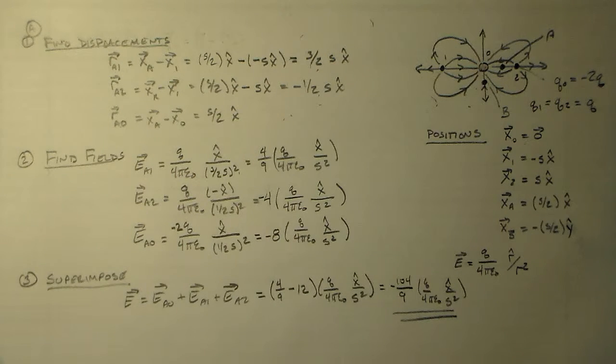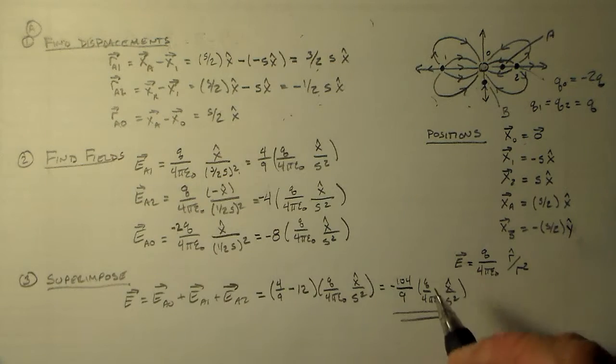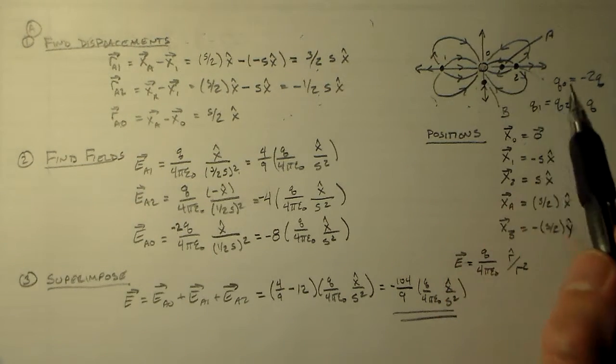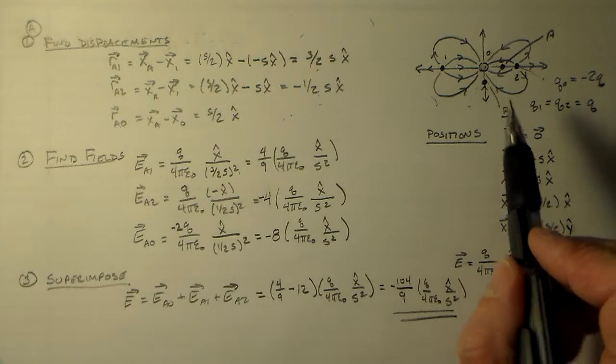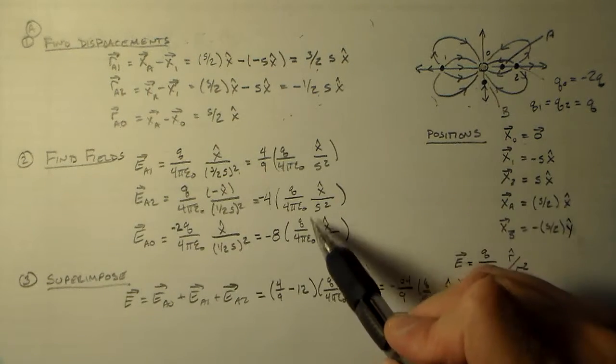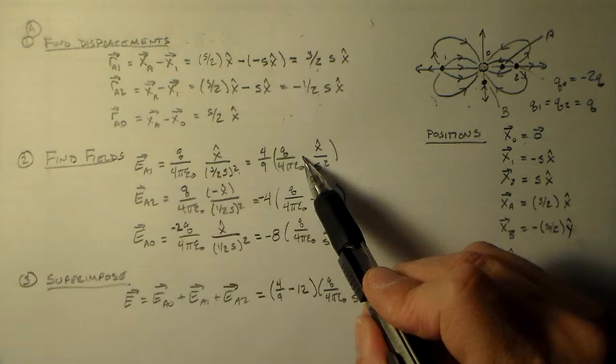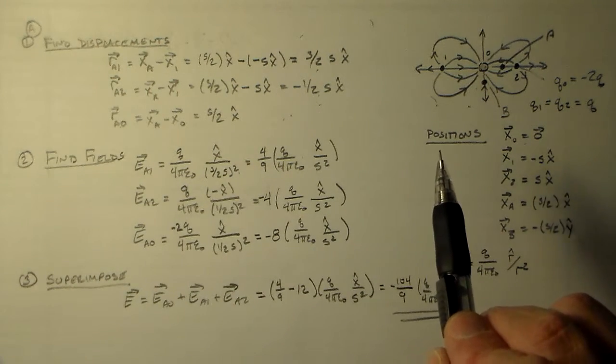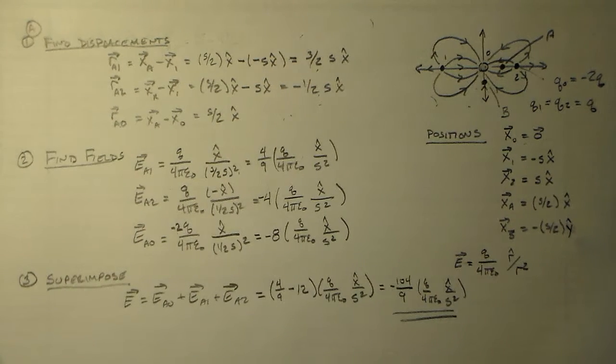So that's equal to minus 104 over 9 q over 4 pi epsilon not x hat over s squared. So that's just a number. And we could look at this in relationship between the field from here to here, right? So when we looked at this, this one's smaller, these two are larger, all makes perfect sense. So that's basically how we do it.